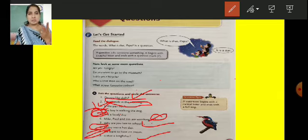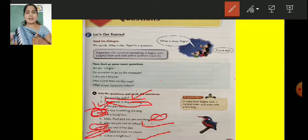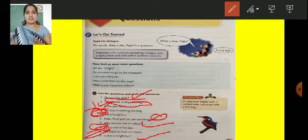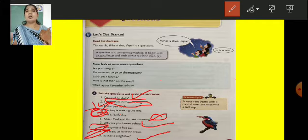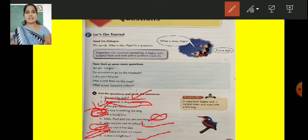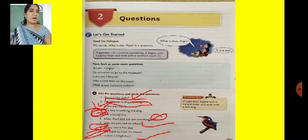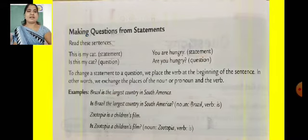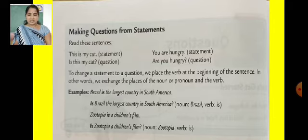Two things you have to keep in your mind, children. How do we identify questions? If it begins with a capital letter and ends with a question mark, we can say it is a question. But if it begins with a capital letter and ends with a full stop, then we will say it is a statement. So you have to keep all this in mind — it is very easy. See the next part, children: page number 16, Making Questions from Statements.